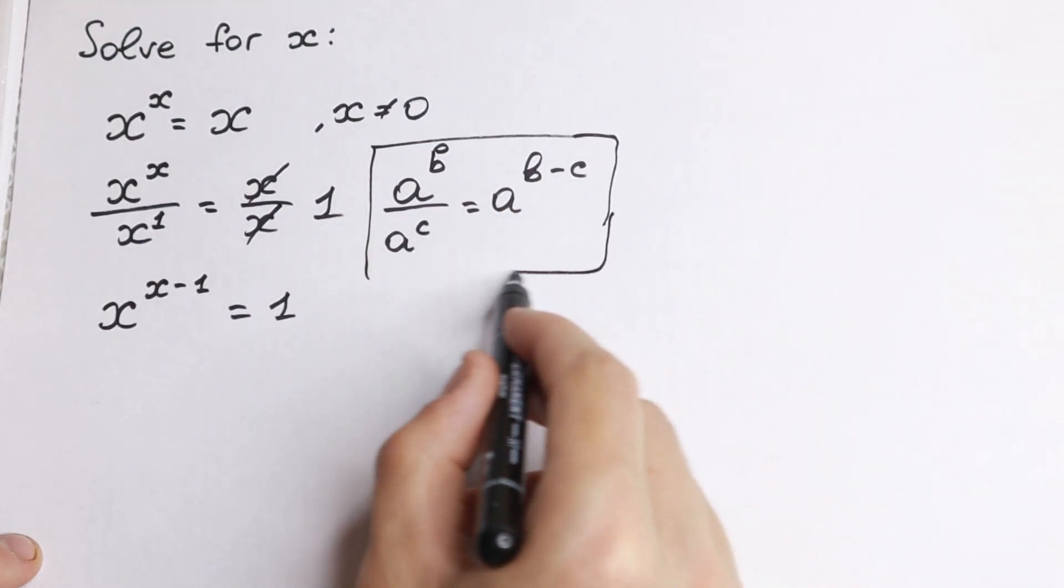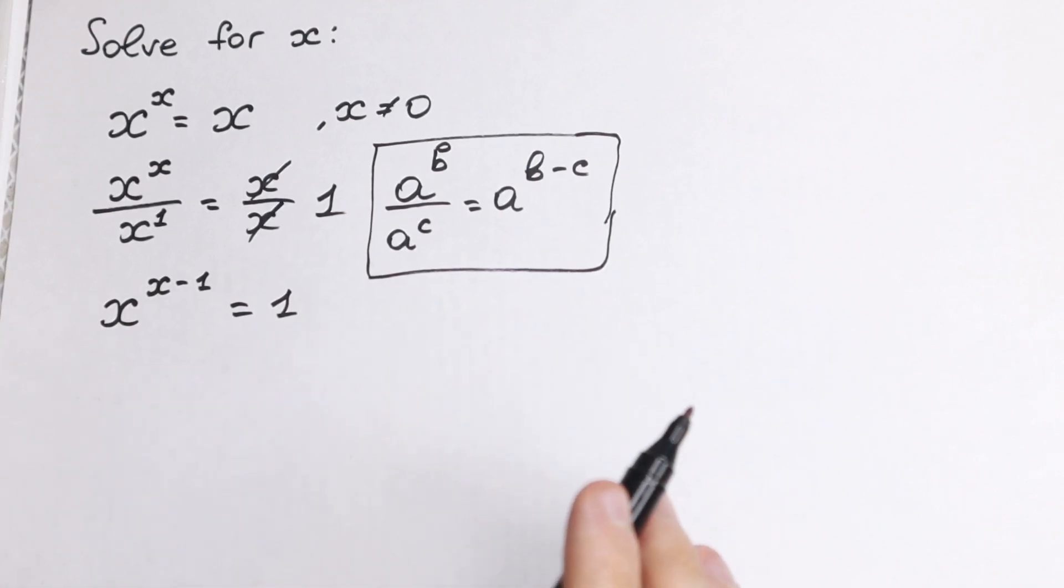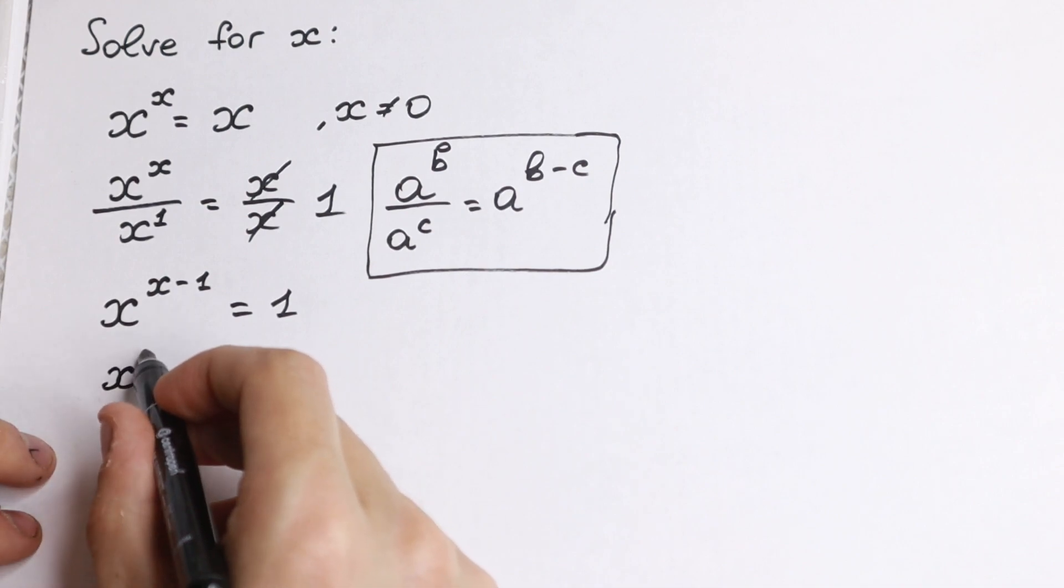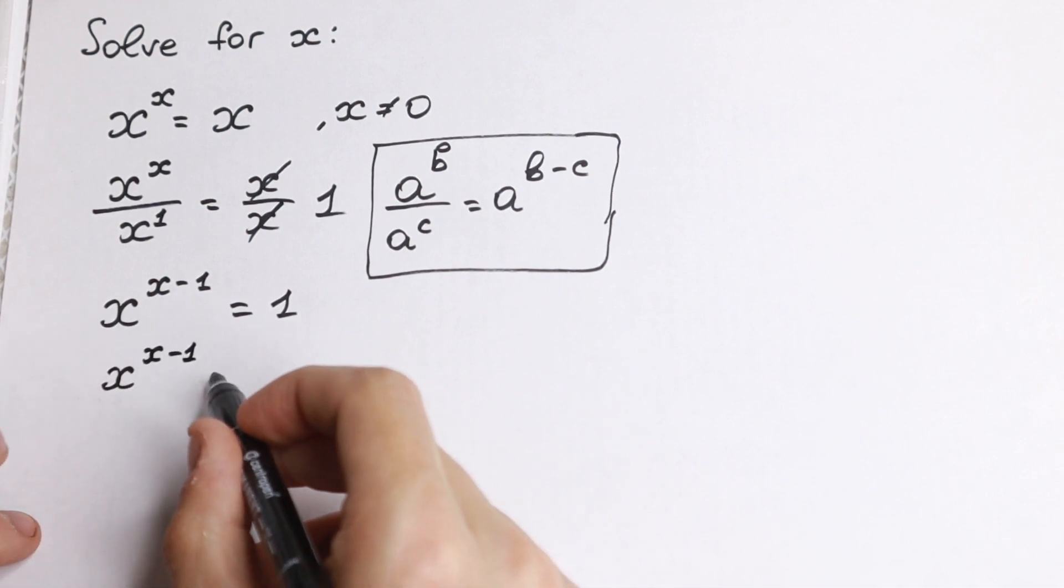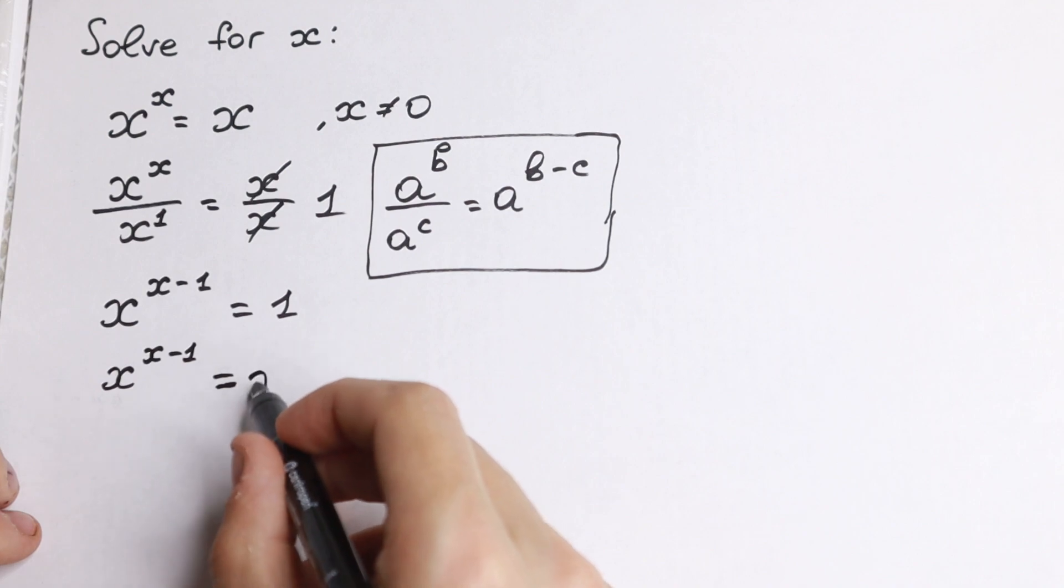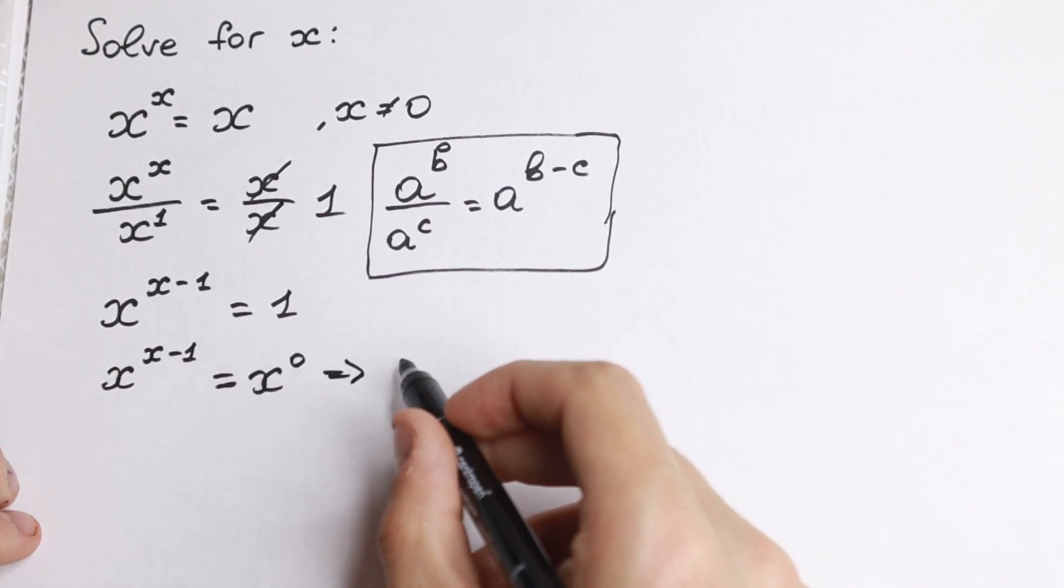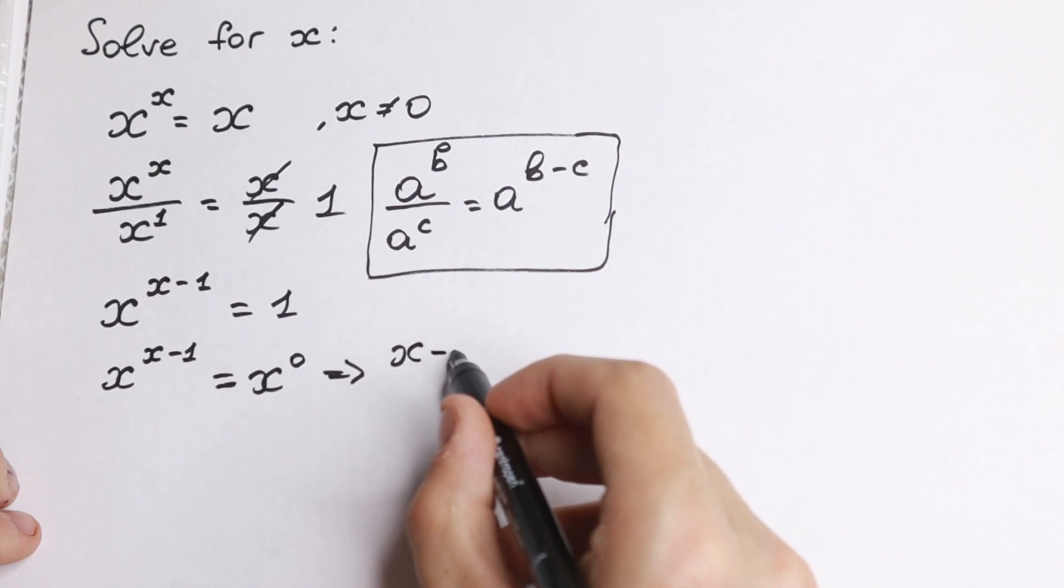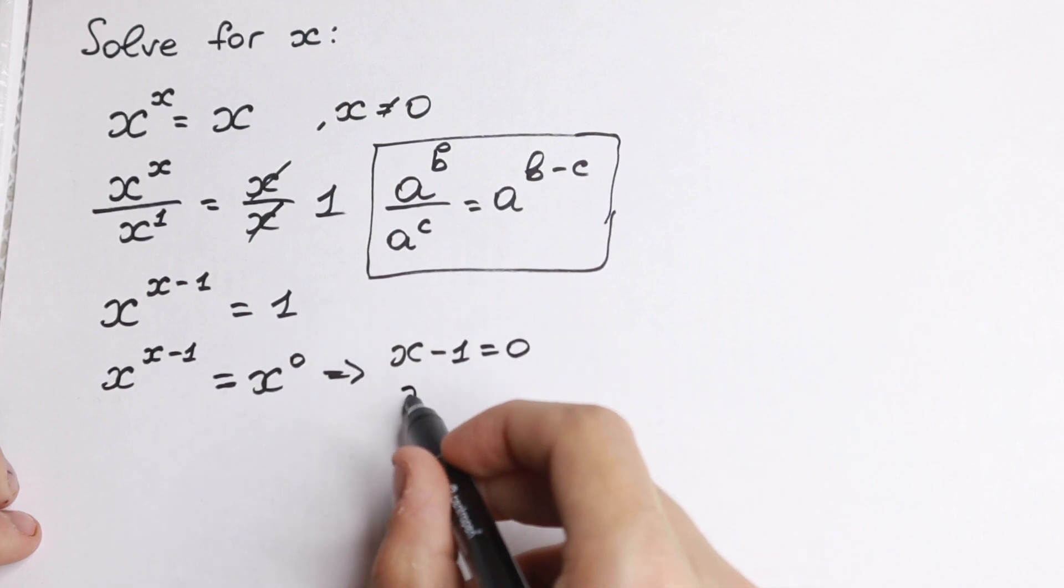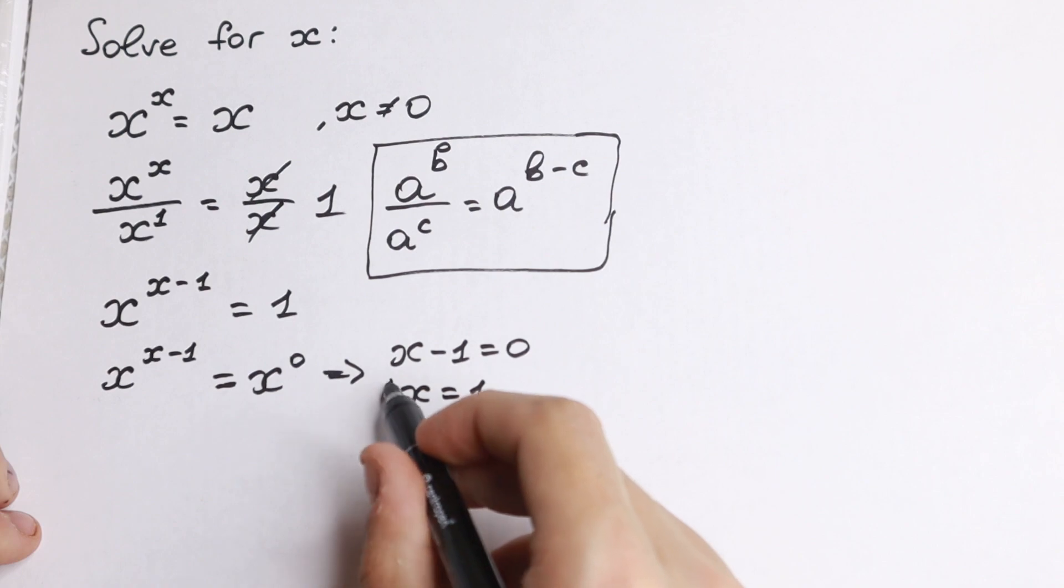So what we're going to do with this expression? Of course we can find right here our first root. Take a look. x to the power x minus 1. And right here we can write this one as x to the 0 power. And from here we can easily find our root x minus 1 equal to 0 and x equal to 1. So we find our first root.